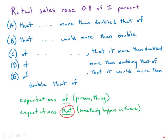of using of, we use that. We have expectations that such-and-such will happen, and so right away we see that the that is correct and the of is wrong because we're talking about an expectation of an event in the future.